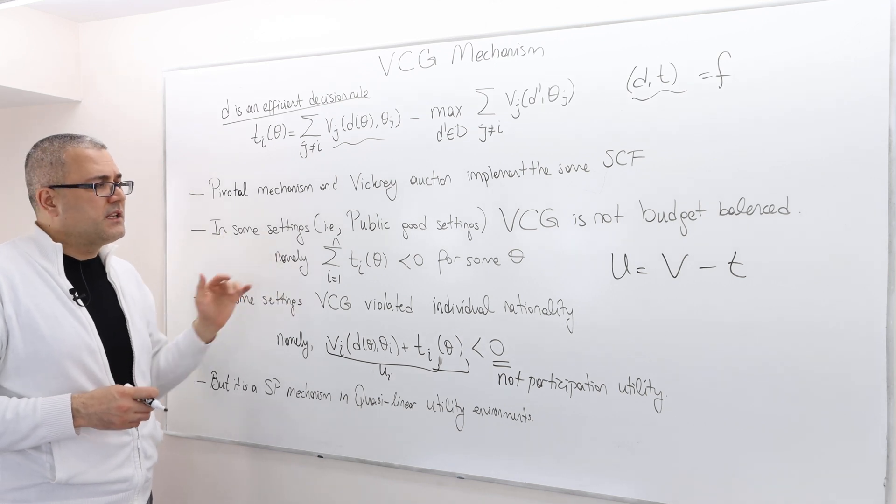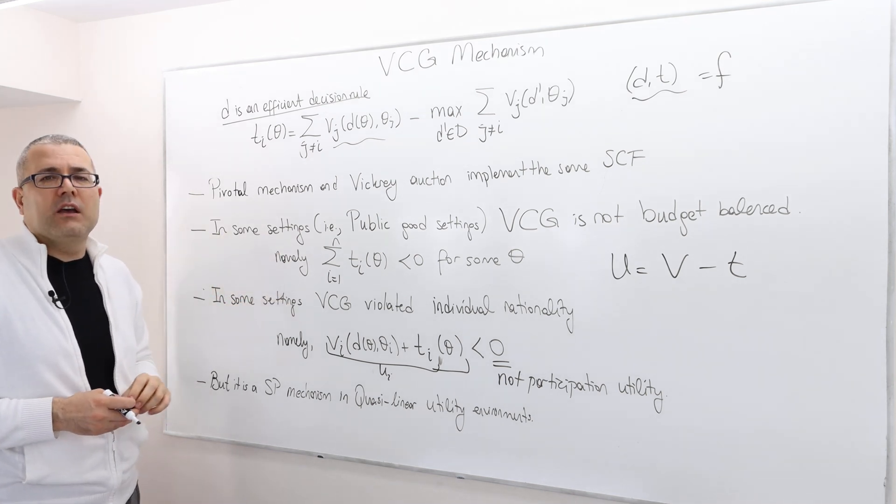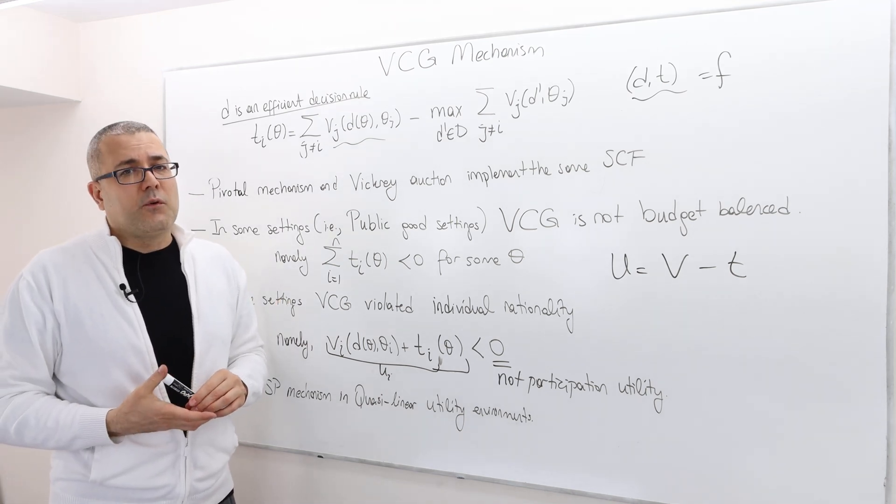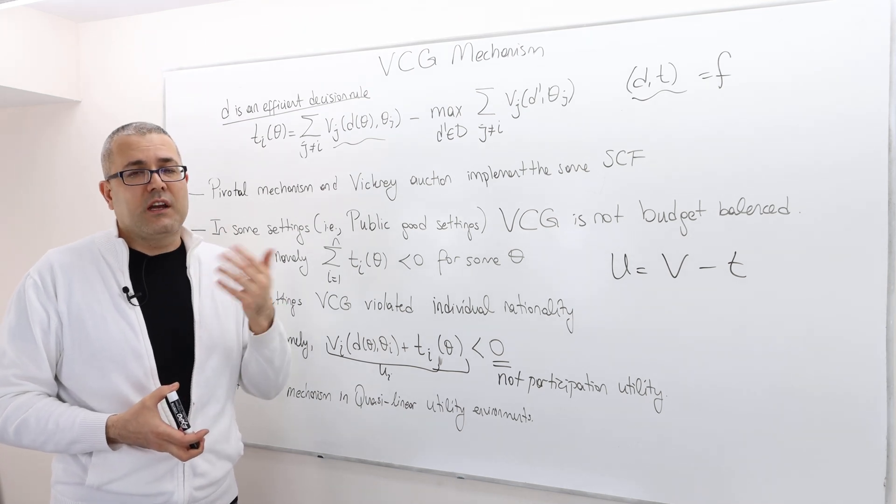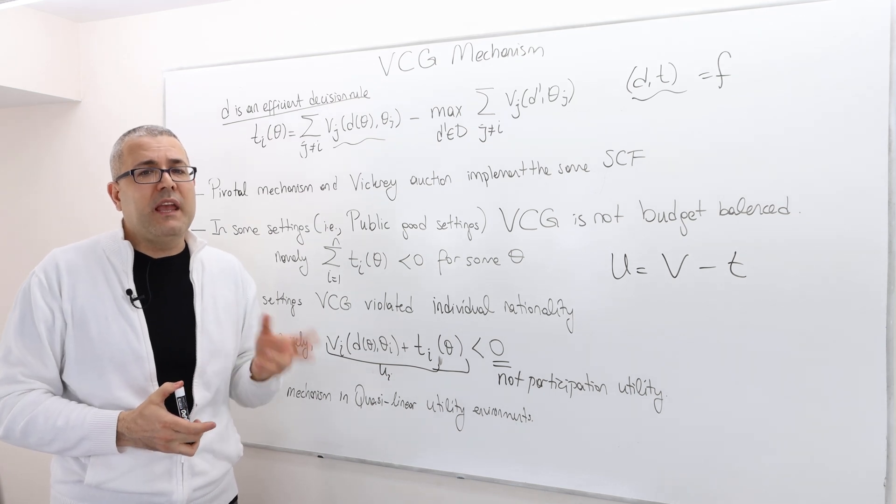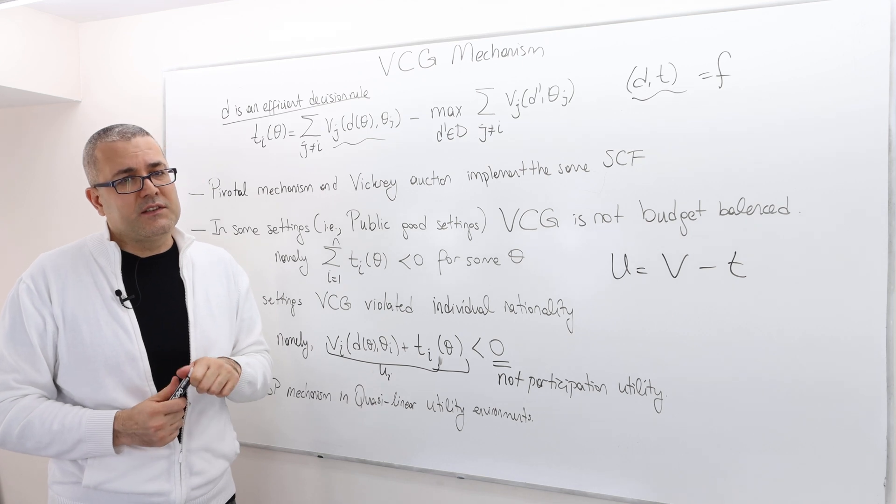Not always but in some environments it violates budget balancedness and violates individual rationality. So this is it for the dominant strategy implementation, dominant strategy mechanism design. Next we are going to start talking about Bayesian mechanism design theory.